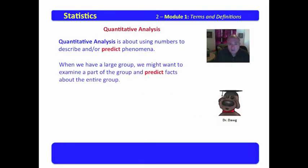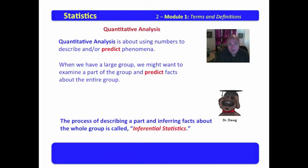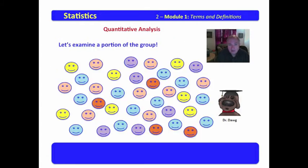When we have a large group, we might use quantitative analysis for a different purpose. We can use quantitative analysis to describe by using descriptive statistics, or we can use quantitative analysis to predict phenomena. When we have a very large group, we might want to examine a part of the group and predict facts about the entire group. The process of describing a part and inferring facts about the whole group is called inferential statistics. So quantitative analysis has two major parts: descriptive statistics and inferential statistics.